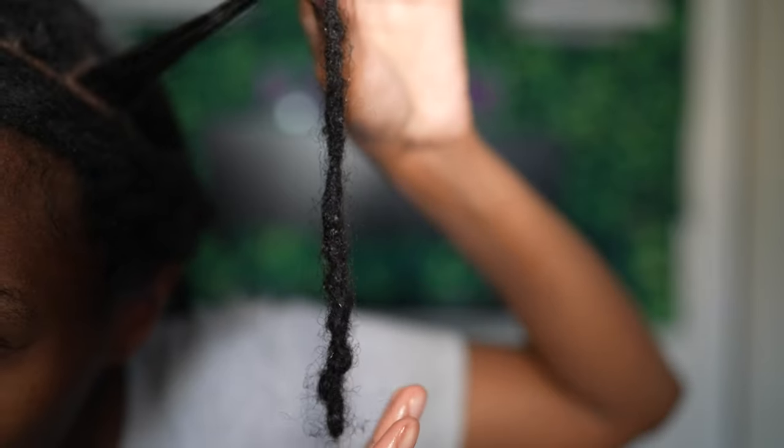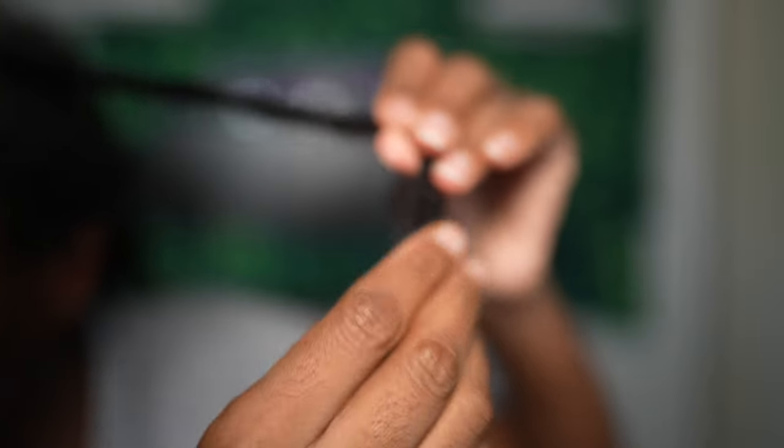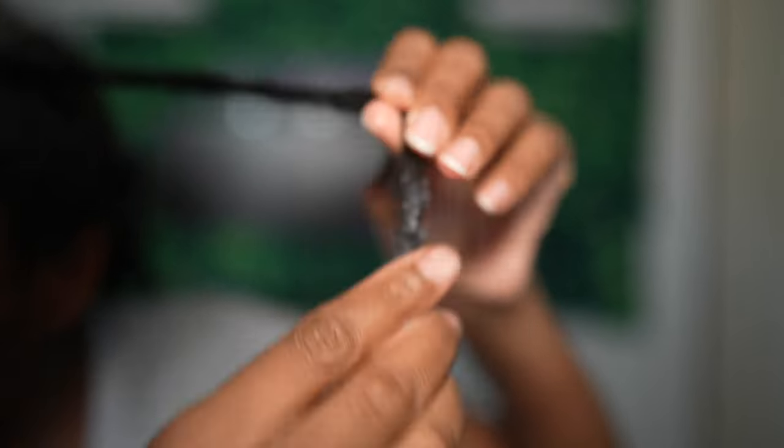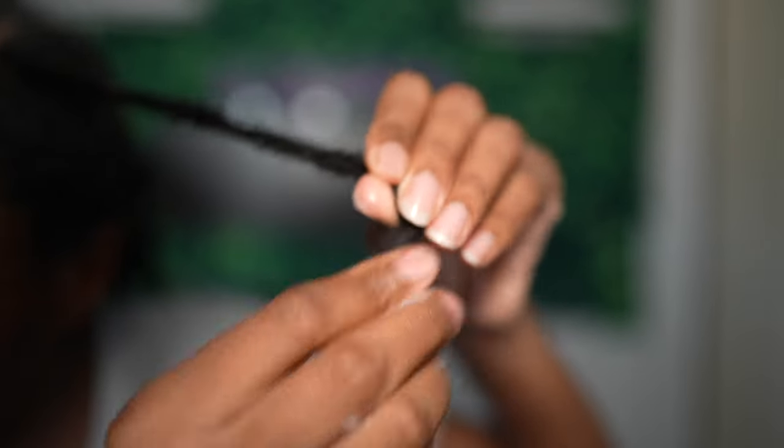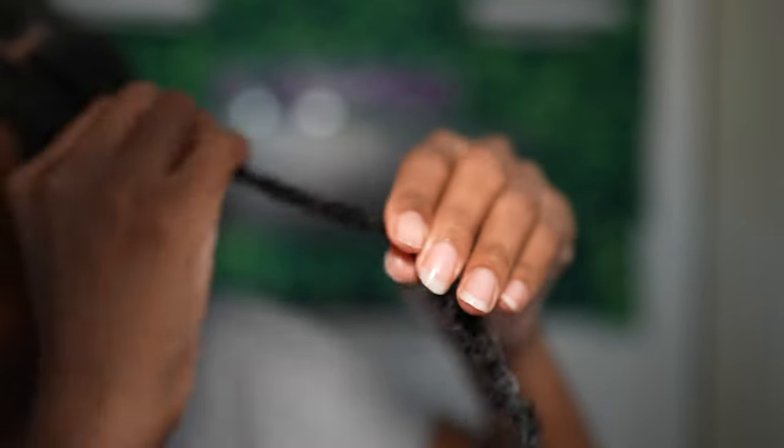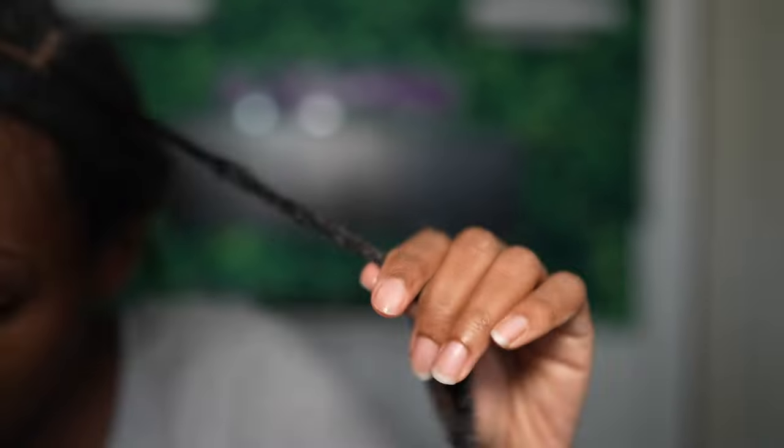Here, I'm just going to show you how much lock I have to take down. You want to saturate the entire lock with conditioner, focusing on the ends primarily because that's what you'll be combing out first. For this lock in particular, it took me about 15 minutes to comb out.